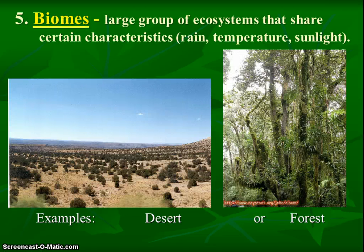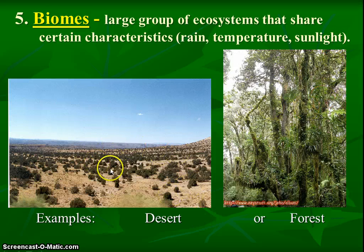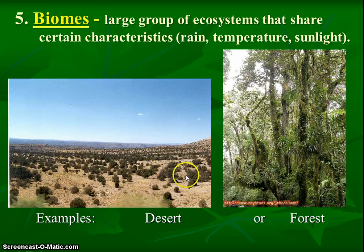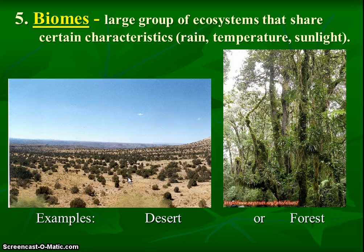We're going to zoom out even farther now to the biome — the largest group of ecosystems. We have lots of things sharing similar characteristics, like rain, temperature, and sunlight. If it's a big area with those shared characteristics, we give it a name like desert: lots of area with little rain, certain types of plants like cacti, tons of sunlight — all the same type of characteristics. We group all the area of creatures and environment that's similar, and call it a biome.